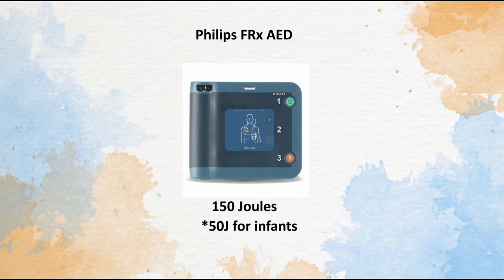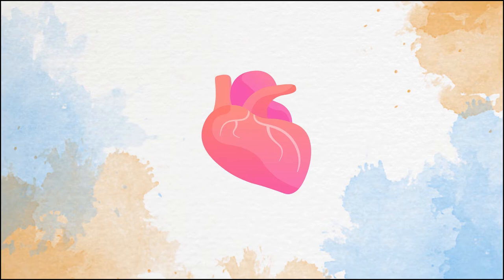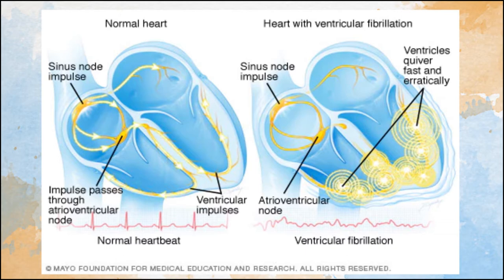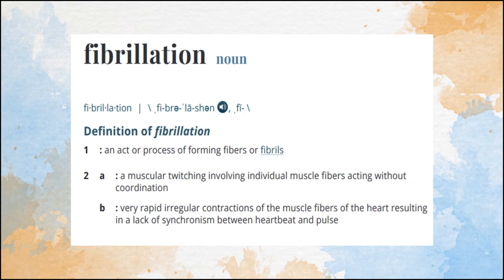The defibrillator is able to obviously defibrillate a heart, but what does that mean? It means that some of the areas of the heart are fibrillating, or, as Merriam-Webster would define it, a twitching involving individual muscle fibers acting without coordination.